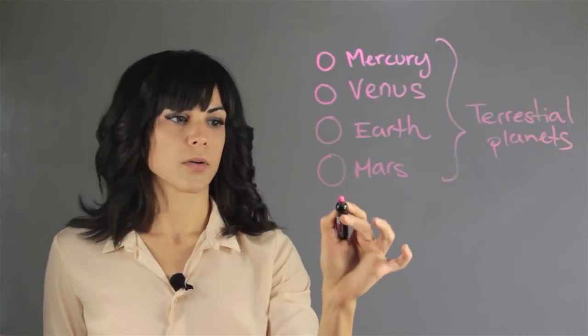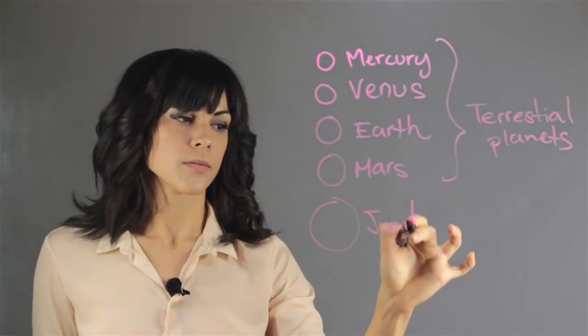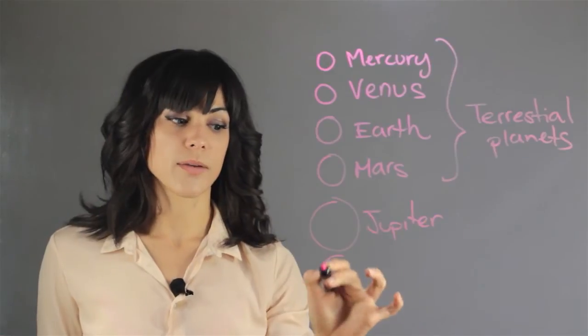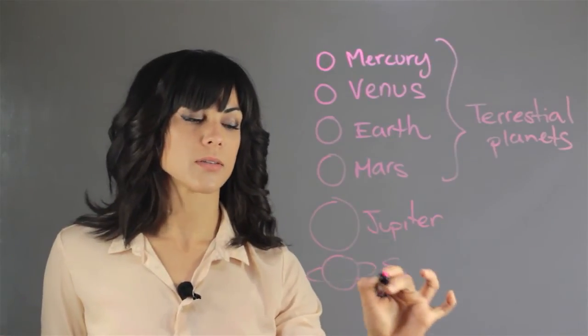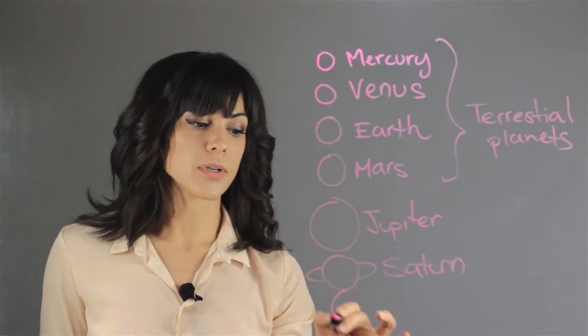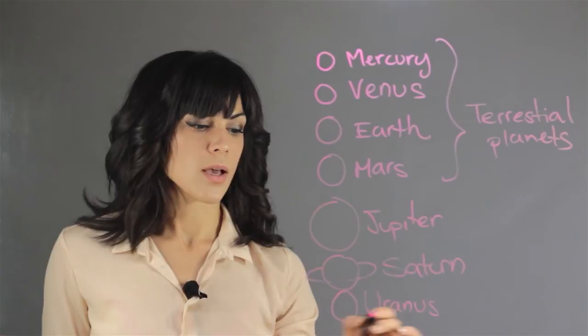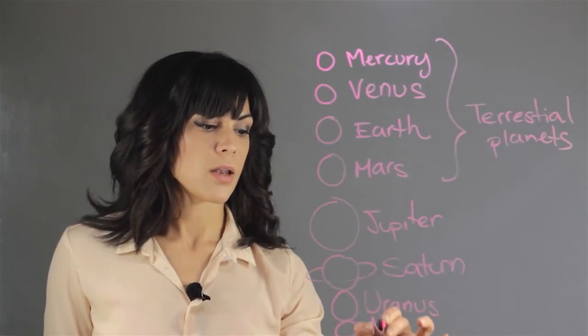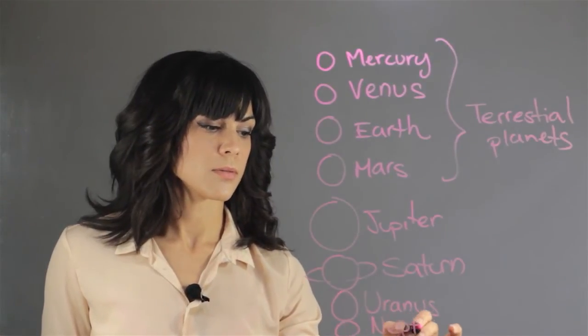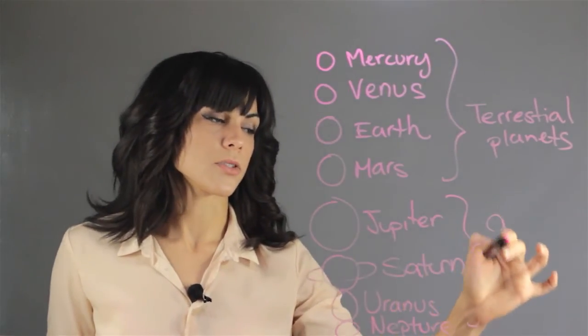So what are the other four? We have Jupiter, which is the largest. We have Saturn with the rings. We have Uranus, and then we have Neptune, and these are classified as the gas giants.